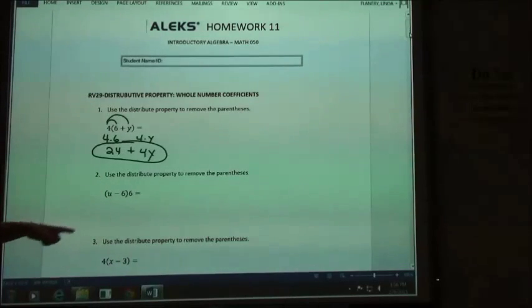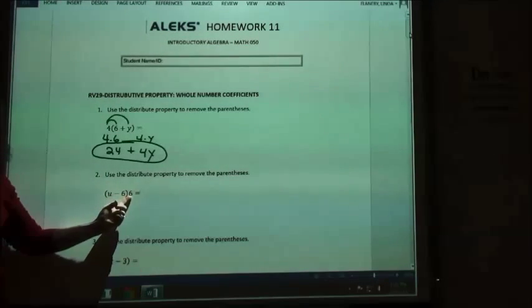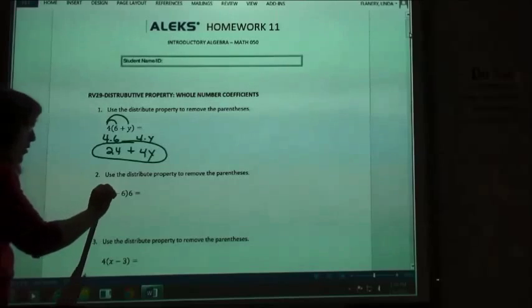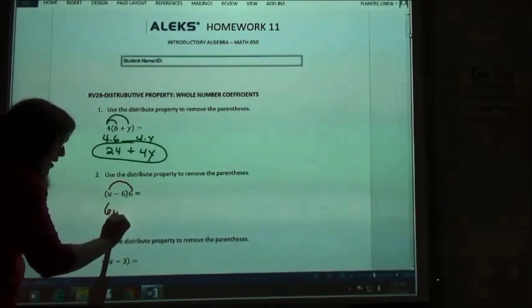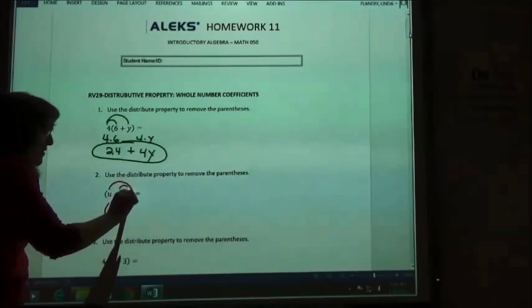On the second one, it's the same thing. They just put the 6 behind the parentheses instead of in front. I'm going to take the u times that 6, which we write as 6u, and then I'm going to take the negative 6 times the 6.